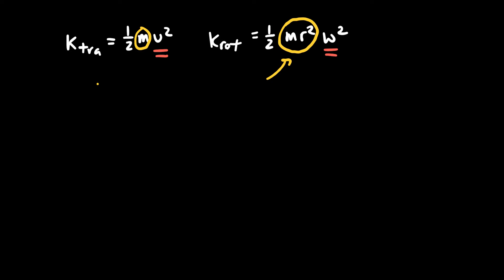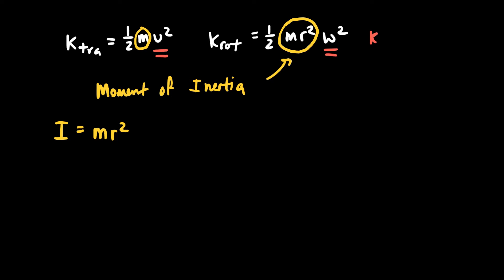The moment of inertia is a quantity that, like mass, describes how easy it is for something to rotate. For a single particle with no physical size, the moment of inertia is simply I equals mr squared. The symbol for moment of inertia is I. So I equals mr squared for a point mass or particle. This lets us write the equation for rotational kinetic energy as one-half I omega squared, which is how we'll write it all the time.